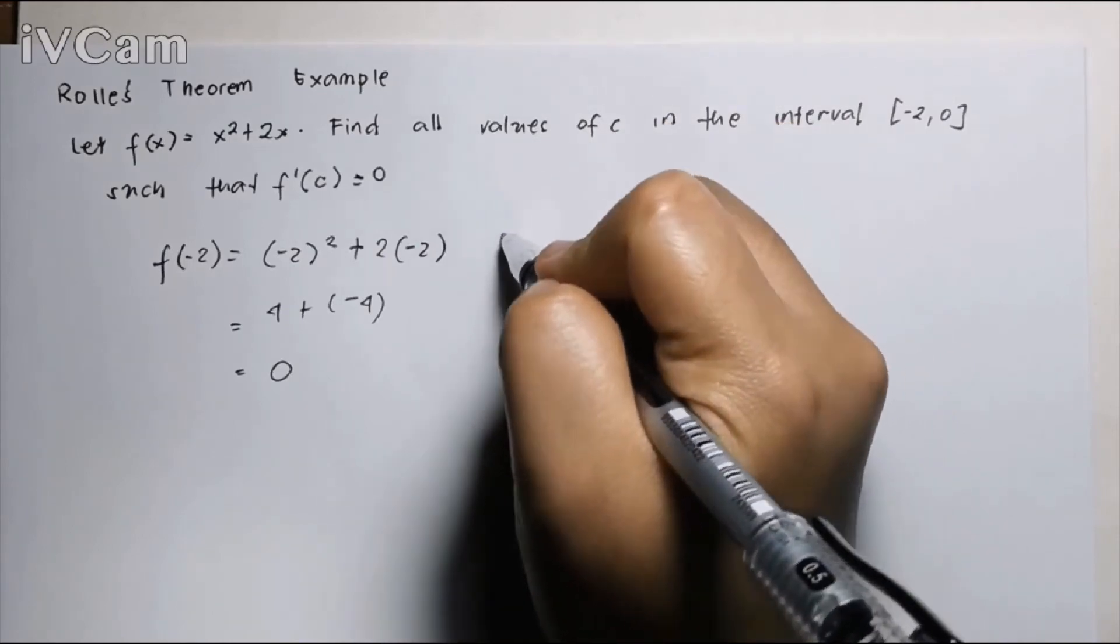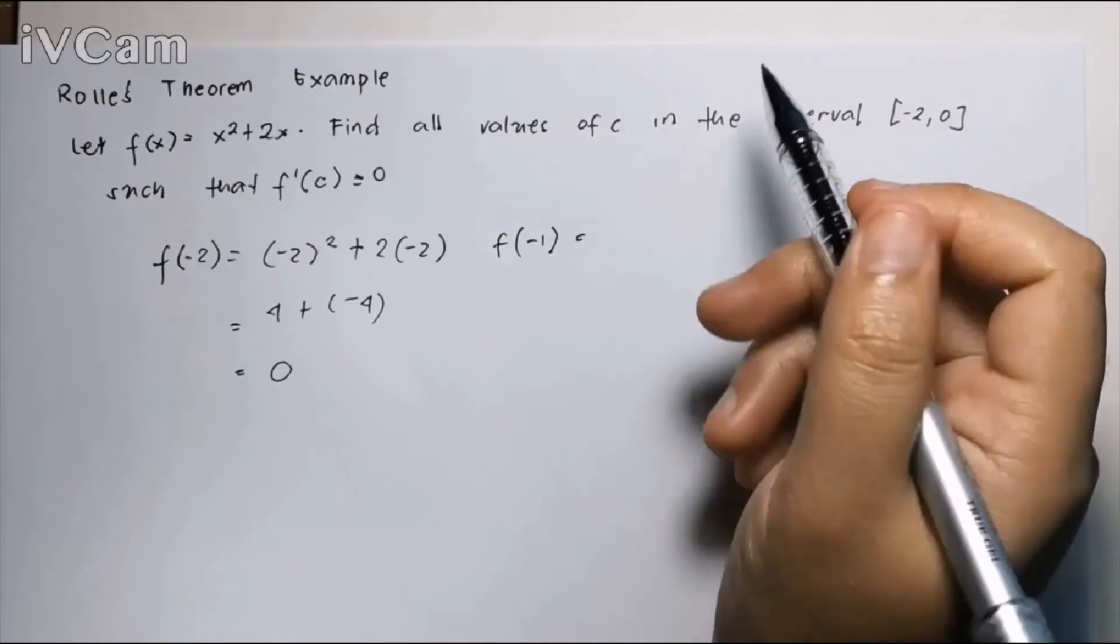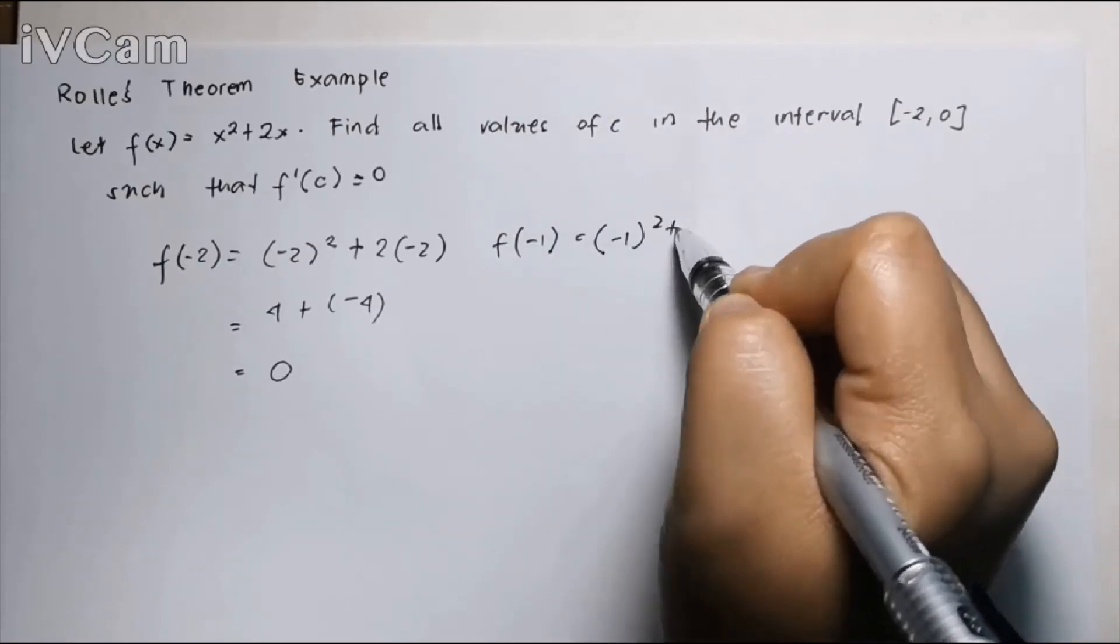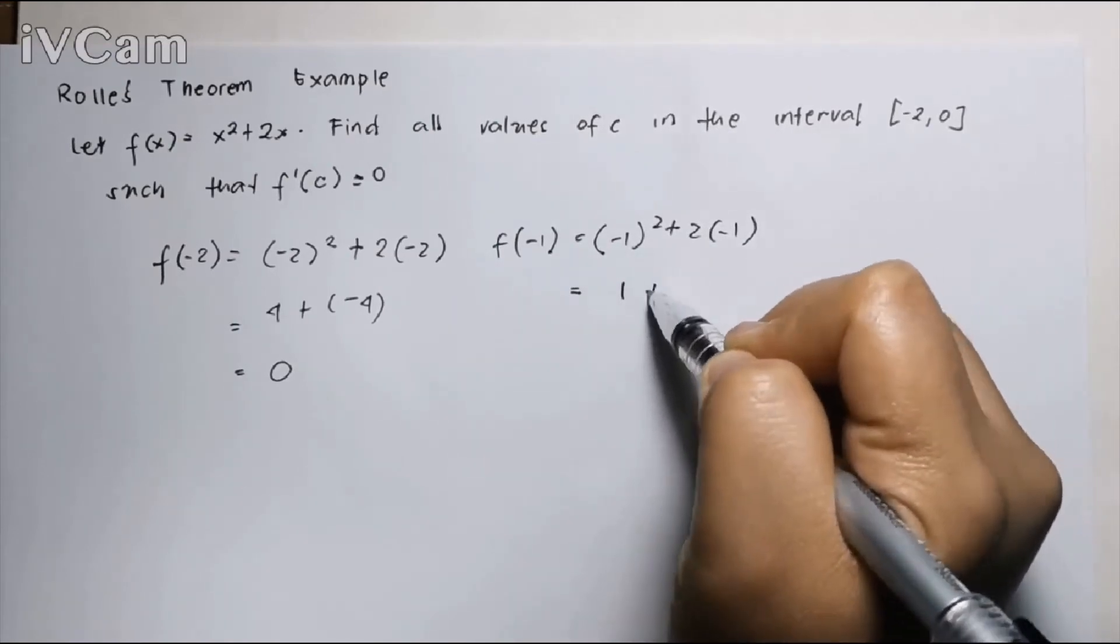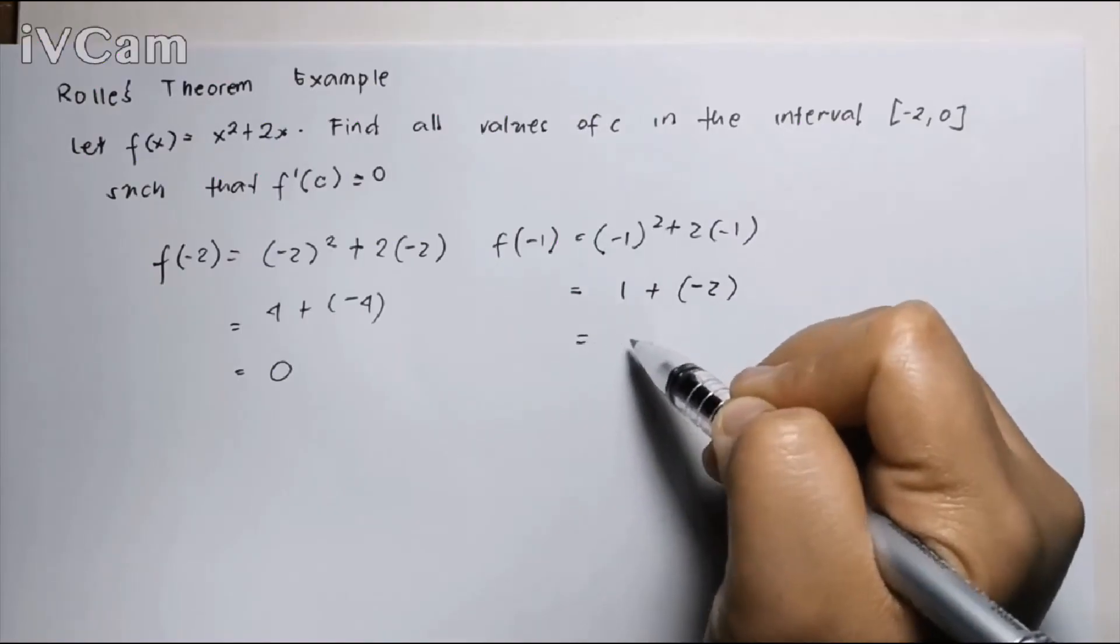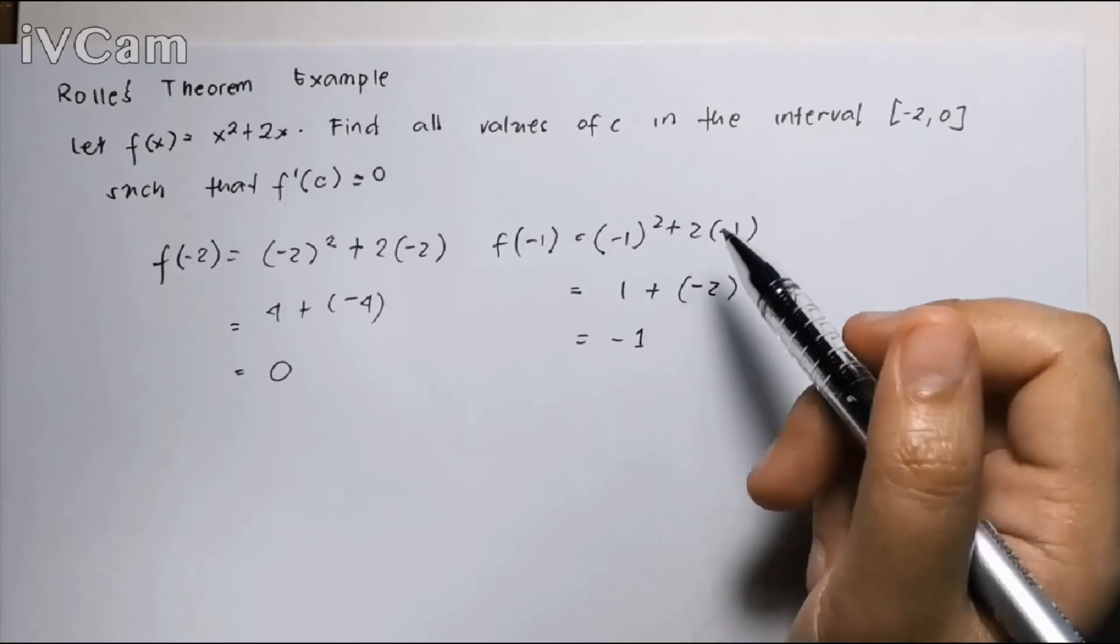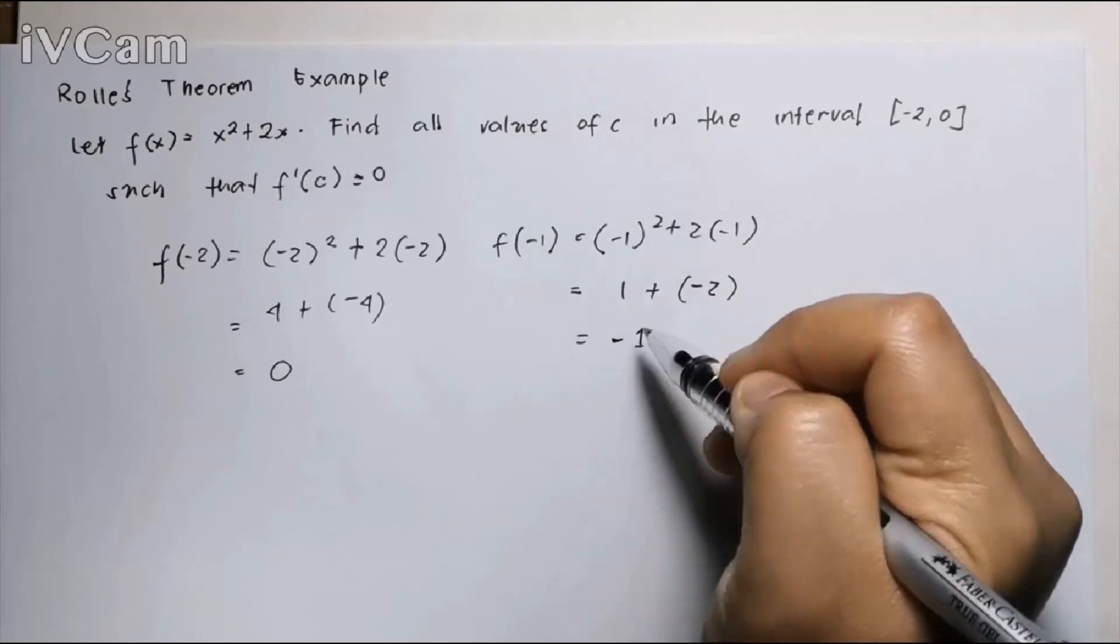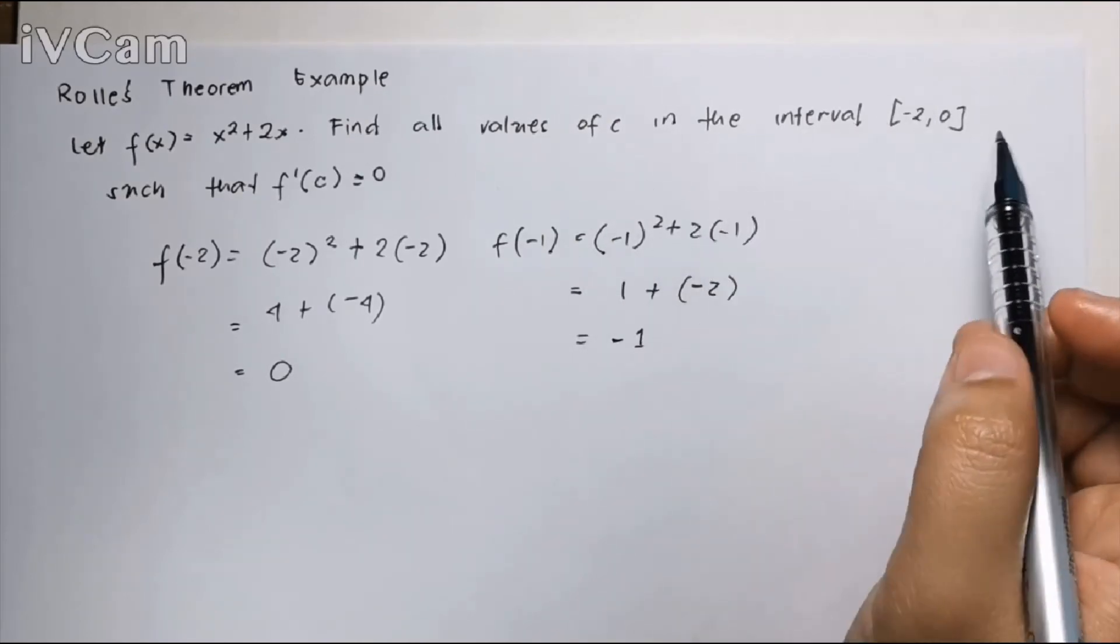Now, let's test at negative 1. Negative 1 squared plus 2 times negative 1. That is 1 plus negative 2, which is negative 1. Since negative 1 is not undefined, or it is a real value, the function is continuous at negative 1.